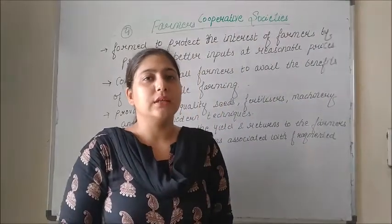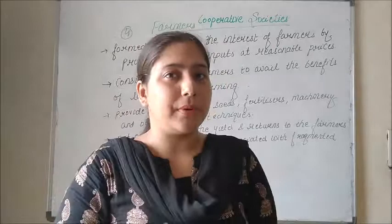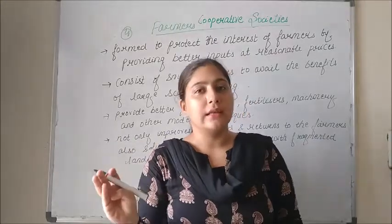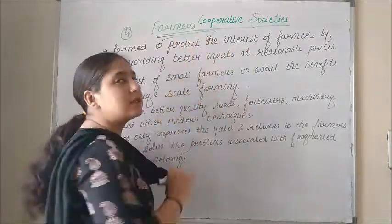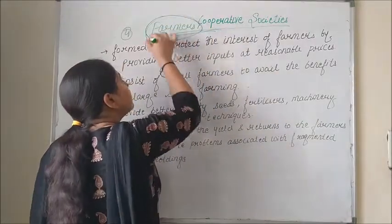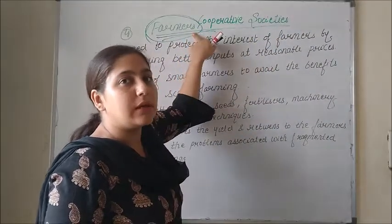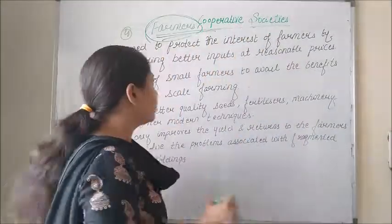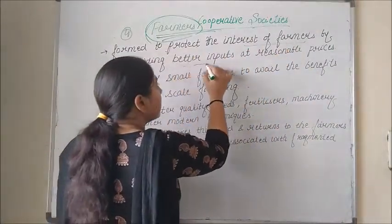Good morning class. Now we have another type of cooperative society. Earlier we covered three types of cooperative societies: consumers cooperative society, producers cooperative societies, and marketing cooperative societies. The next type is farmers cooperative societies. As it is clear from the heading, it is related with the farmers — these societies are specially formed to protect the interest of farmers.